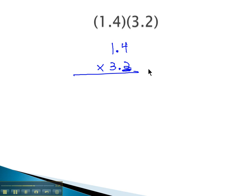multiplying the 2 first. 2 times 4 is 8, 2 times 1 is 2. And then with a 0 for a placeholder, we'll multiply by 3. 3 times 4 is 12, carry the 1. 3 times 1 is 3, and one more is 4.